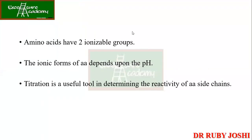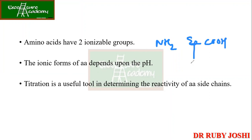In amino acids there are always two ionizable groups — NH3 plus and COO minus. Actually in their neutral forms they are NH2 and COOH. The ionic forms of amino acid depend upon the pH, because at acidic pH you have more H plus, so your COO minus will become COOH.